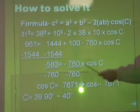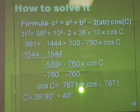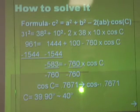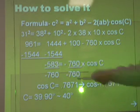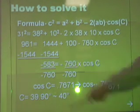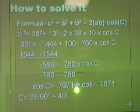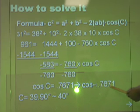And then you put down 760 times cosine C. So then what you need to do is divide negative 760 on both sides. The answer from dividing these two numbers is 0.7671. So then you do the inverse of cosine. The inverse of cosine of 0.7671 will give you 39.90, which comes out if you round it to 40 degrees.